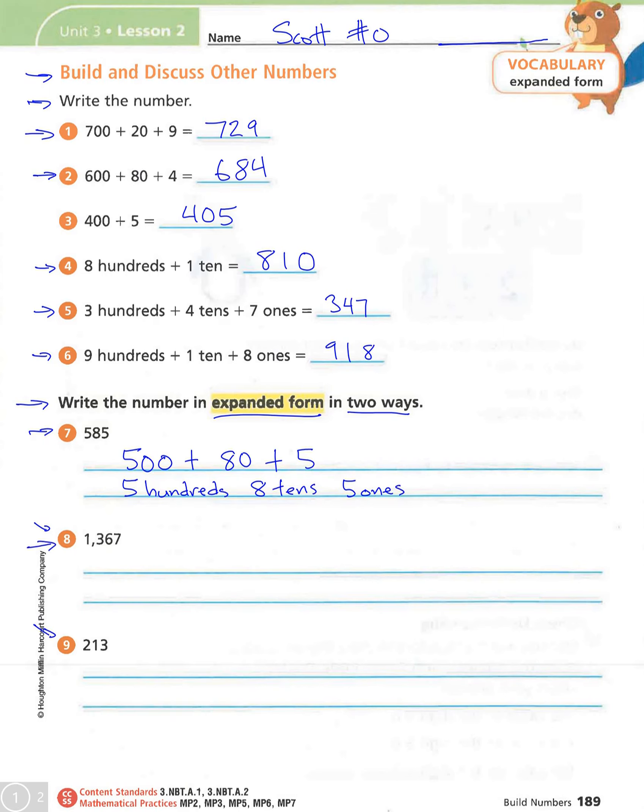Down here on number 8, we have 1,000 plus 300 plus 60 plus 7. So we have 1,000.